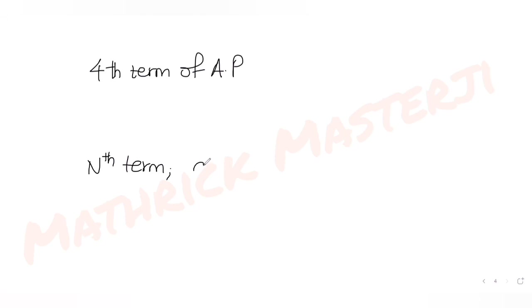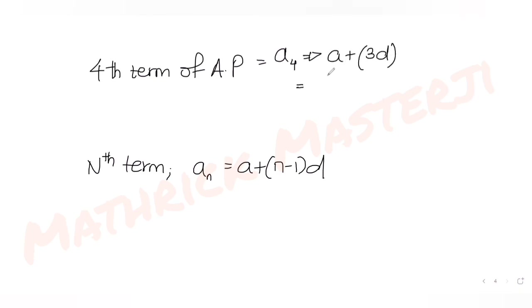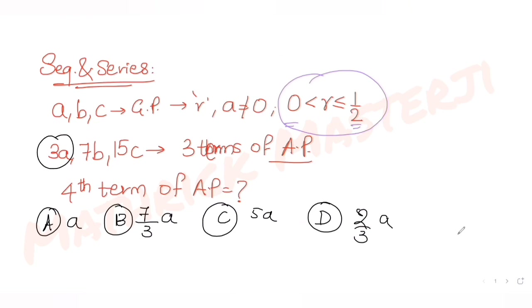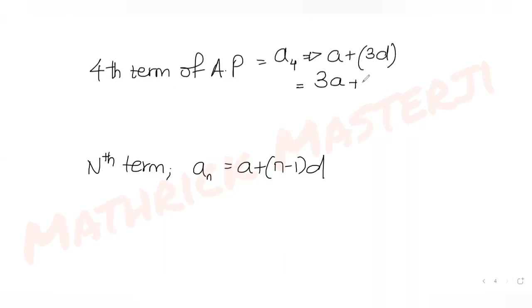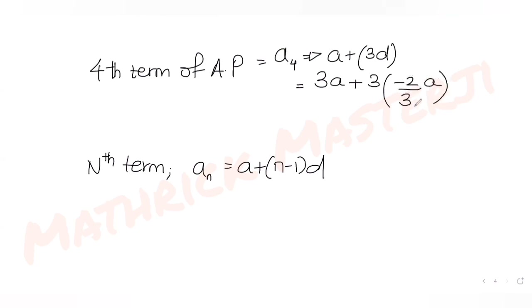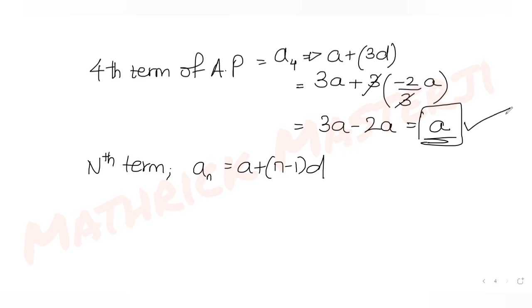To find the fourth term, we use the nth term formula: nth term equals first term plus (n minus 1) times the common difference. For n = 4, this gives first term plus 3 times d. The first term of the AP is 3a, so we get 3a plus 3 times (minus 2a/3). The 3s cancel, giving 3a minus 2a, so the fourth term equals a.